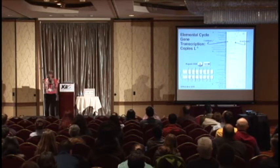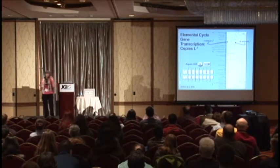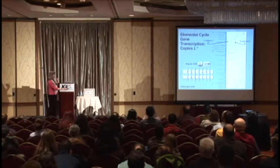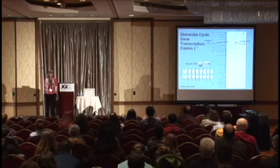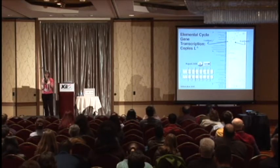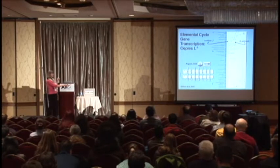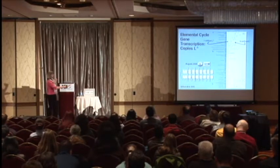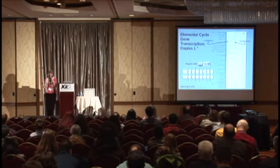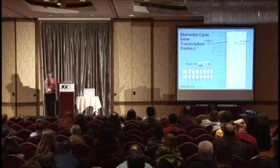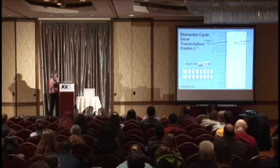Anything between those two lines comes up as maybe a couple to ten transcripts — we know they're there but don't have enough statistical power for comparisons along the time series. Anything above that threshold, at least 15 million copies per liter, is much easier to track over time. The deeper we sequence, the more those two lines will shift, and it'll get better in terms of how much of this transcriptome we can access and how well we can do statistical comparisons.